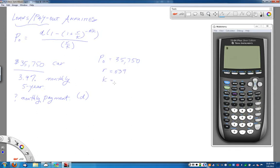K is how many compounding periods per year, which since we're doing monthly payments is 12. N is the number of years of my loan, which in this case is 5. And I think that's all the info that I have.